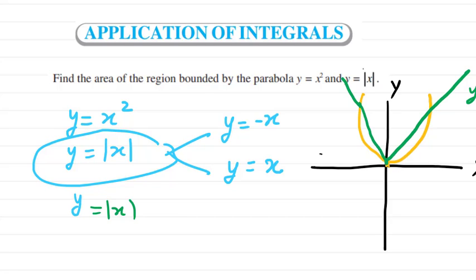The yellow one is the parabola, and you can see the green one shows the graph for y equals mod x. The other curve is y equals x squared. This will be the figure for this problem.